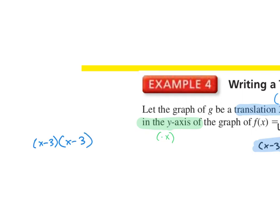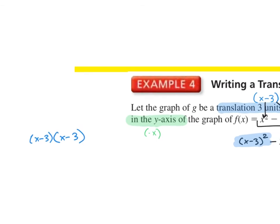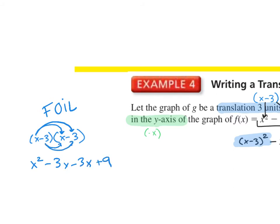How do we simplify x minus 3 squared? The 2 is telling us that it's squared, so we have x minus 3 times x minus 3. We multiply these using FOIL. First terms: x squared. Outside terms: negative 3x. Inside terms: negative 3x. Last terms: plus 9. When we simplify, we get x squared minus 6x plus 9.